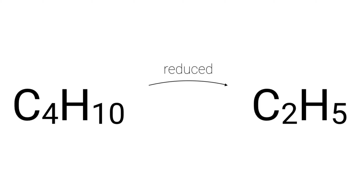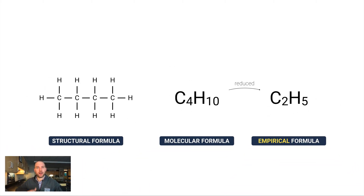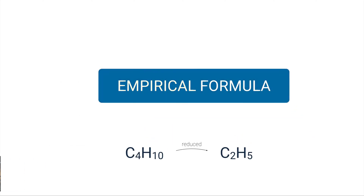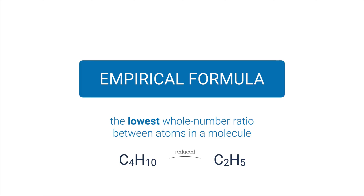With C2H5, you can't go any lower — there's nothing you could divide both two and five by to get smaller subscripts while maintaining the same proportion. That's how you know it's the empirical formula. C2H5 is not directly representing the substance; it just shows the proportion between atoms. An empirical formula is the lowest whole number ratio between atoms in a molecule. Keep dividing subscripts until you can't divide anymore.